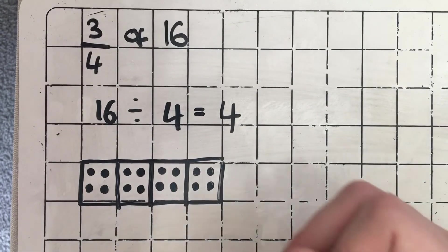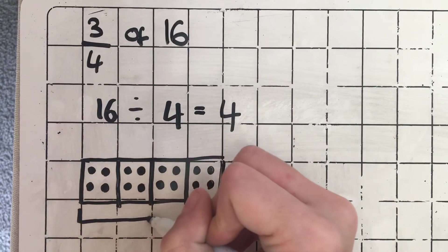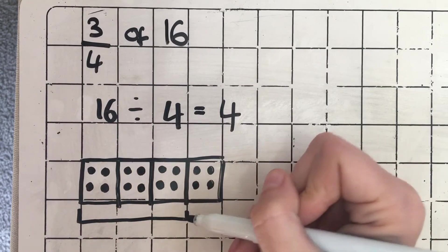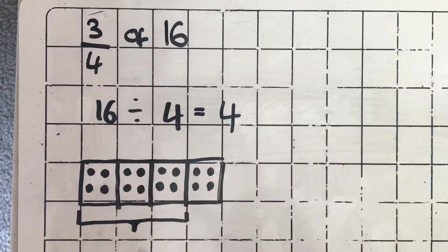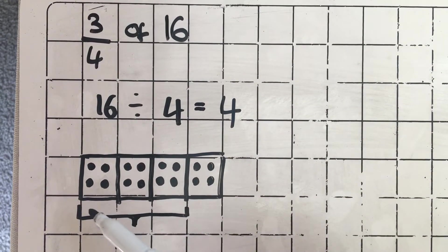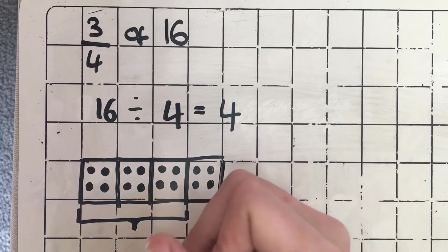Now I need to select 3 parts. So that means I need to add all of the dots in these 3 parts together, which is the same as doing 4 times 3.